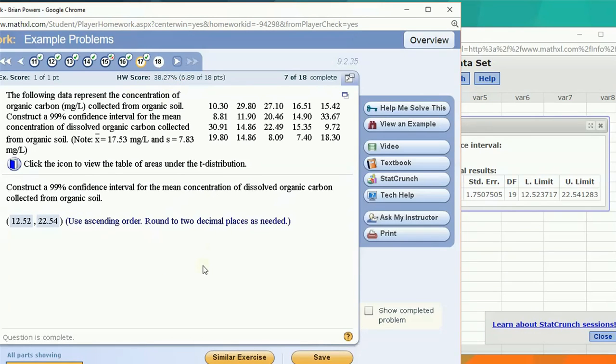And again, the way we interpret that is we would say we are 99% confident that the population mean is between 12.52 and 22.54 milligrams per liter organic carbon.